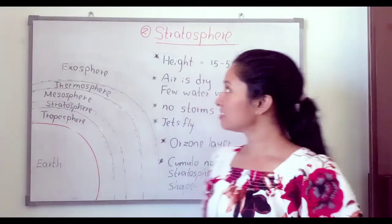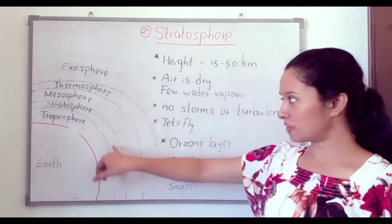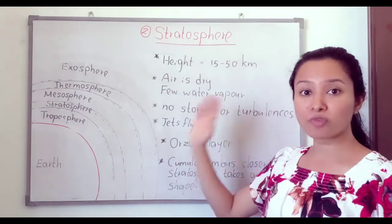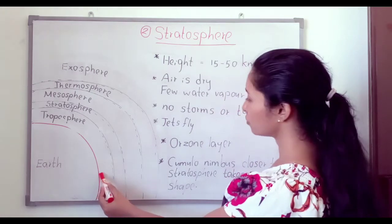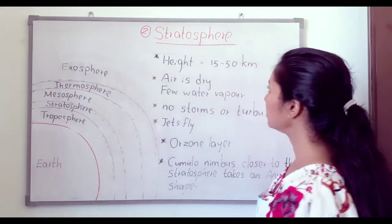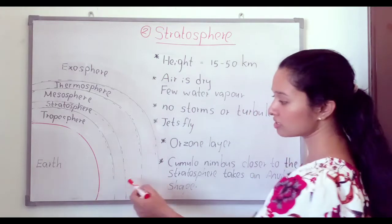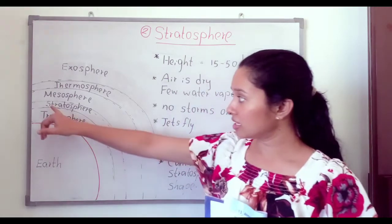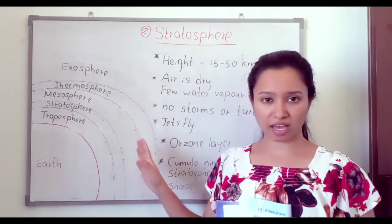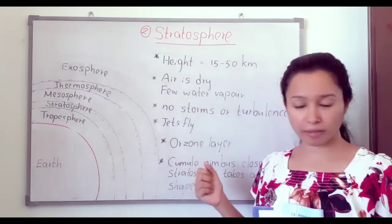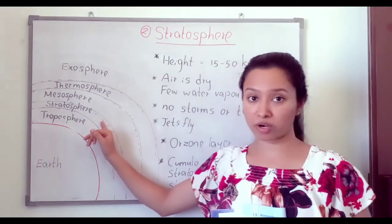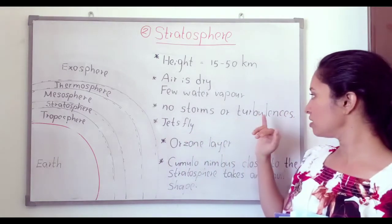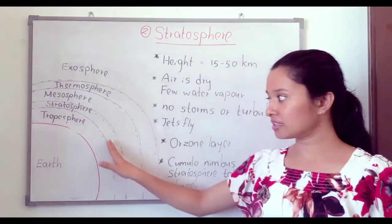The second layer is stratosphere. The height of this layer is about 15 to 50 kilometers from the sea level. In the stratosphere, the air is dry — there are only a few amounts of water vapor. Because the air is dry, we cannot see storms or turbulences in this layer.